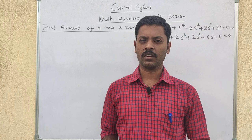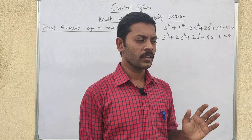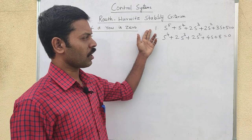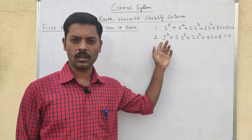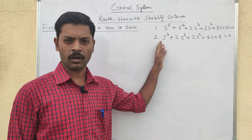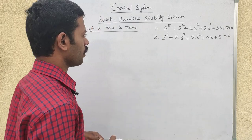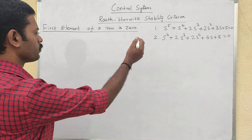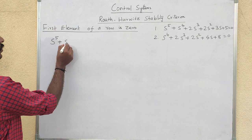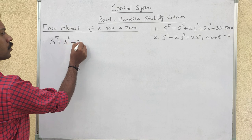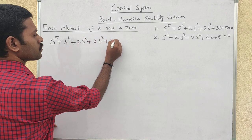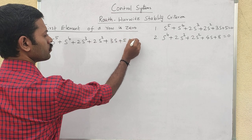We will look at two problems. The first problem has the characteristic equation: S to the power of 5, plus S to the power of 4, plus 2S cubed, plus 2S squared, plus 3S, plus 5, equal to zero.